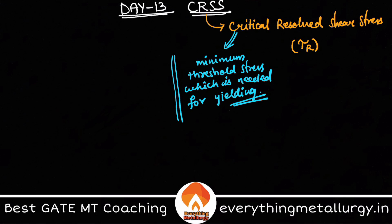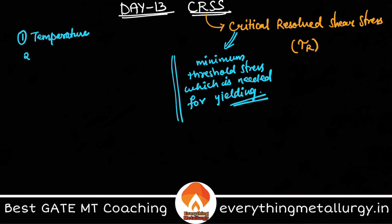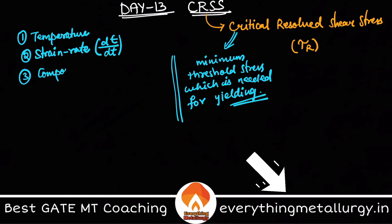CRSS of a material can be explained as the minimum threshold stress where, if you only go above this particular level, there will be yielding taking place in the system. The CRSS depends on many criteria, out of which important ones are: temperature, strain rate — which is the rate of change in strain with respect to time — and finally the composition itself. These are some macroscopic factors which affect CRSS.